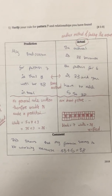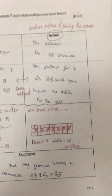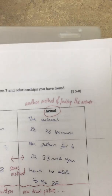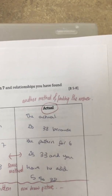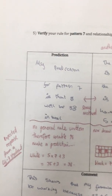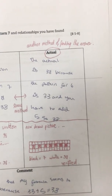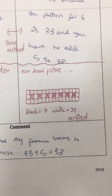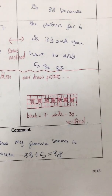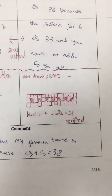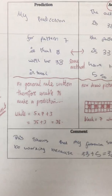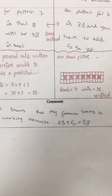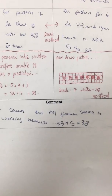You should use your general rule to make your prediction, then find the actual answer using a concrete method. Each criteria B is designed so students have an actual way to get the answer — not using the equation they made up. For grade 6, all they have to do is draw out 7 flower beds and count all the white squares, which comes to 38. The comment at the end: my prediction matches my actual, therefore my formula seems to be working — though I've only done it for one case.